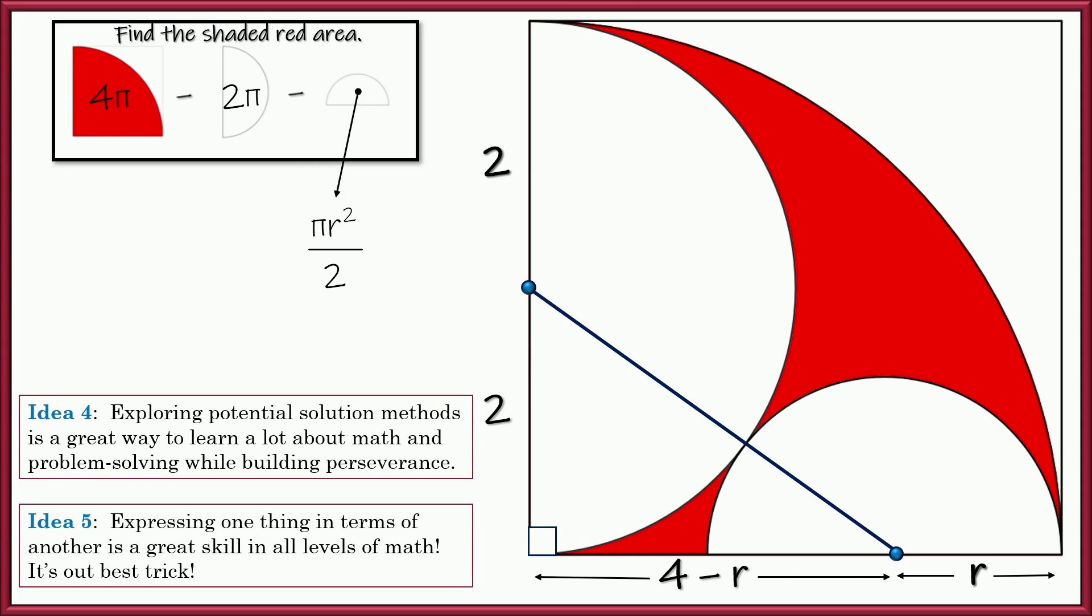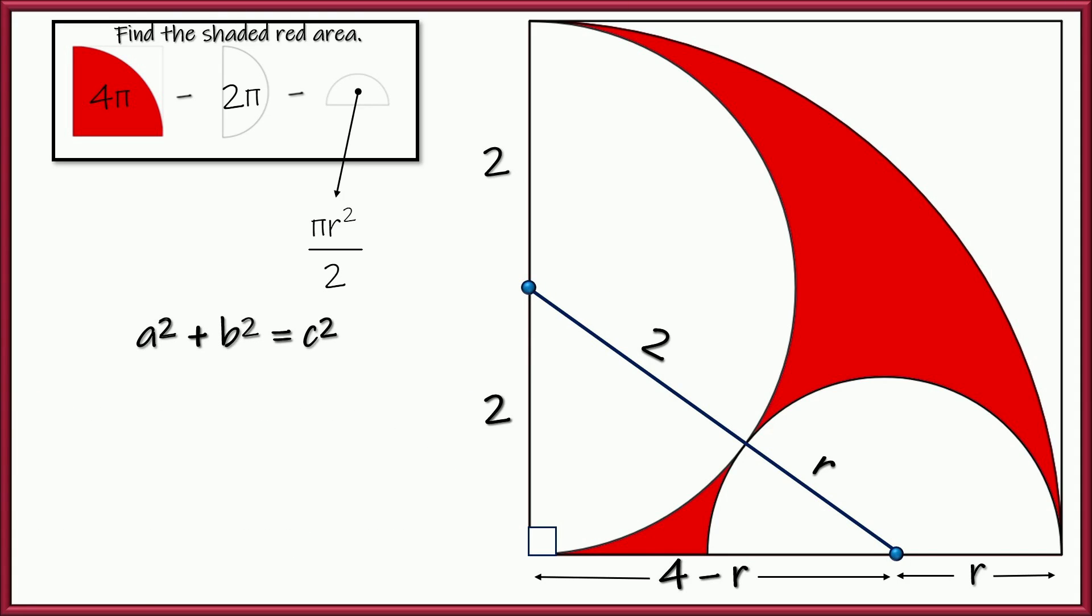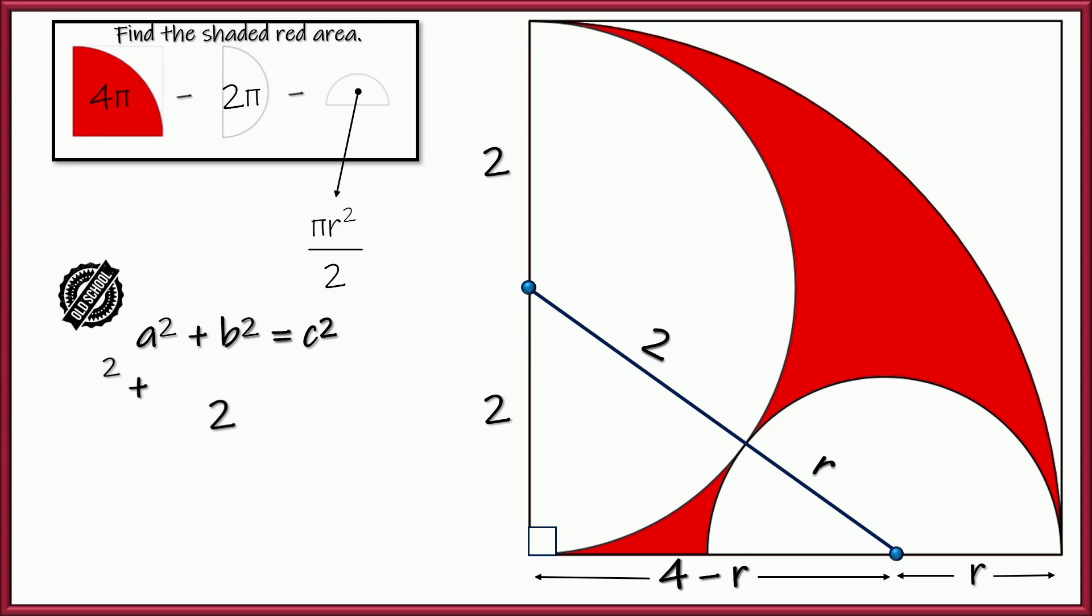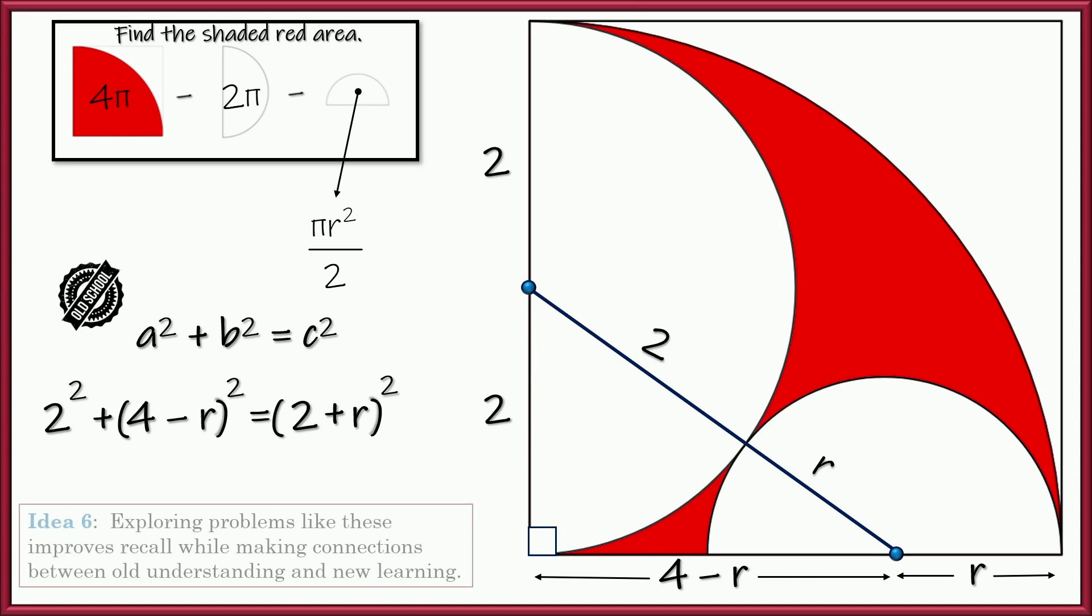Well, expressing one thing in terms of another is probably the best trick we have, right? So here's what we're going to do. We're going to figure out what r is by exploring the Pythagorean theorem, right? Now that's another thing that's kind of cool. Another idea I was thinking about that is really beneficial to students is that when they apply something old like the Pythagorean theorem to something like this, man, they're tying in all kinds of things, making all kinds of connections, and they're just going to be more fluent when they do that kind of thing, right? All right? So here's what we've got. We've got 2 squared plus 4 minus r squared equals 2 plus r squared.